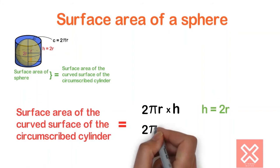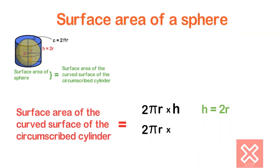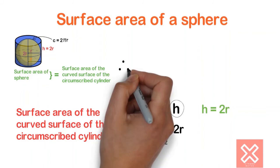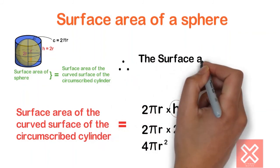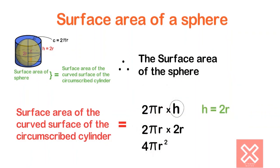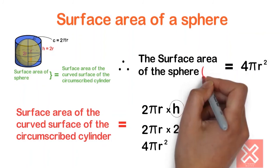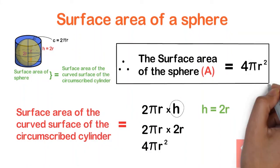So we substitute H = 2R into the formula: 2πR × 2R = 4πR². This is the total surface area of the curved surface of the circumscribed cylinder, which equals the surface area of the sphere. Therefore, the surface area of the sphere equals 4πR², or A = 4πR².